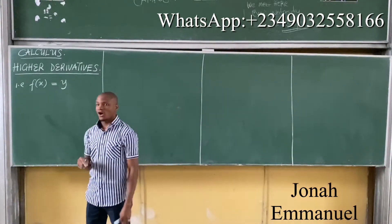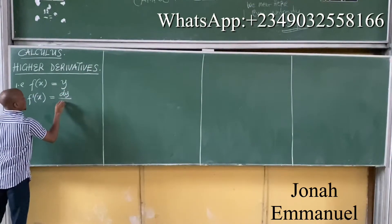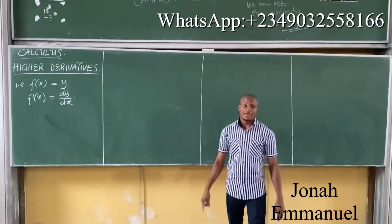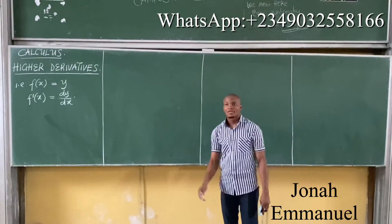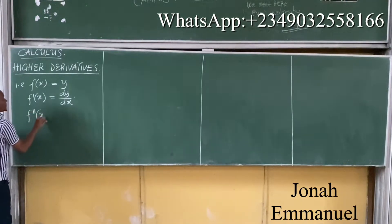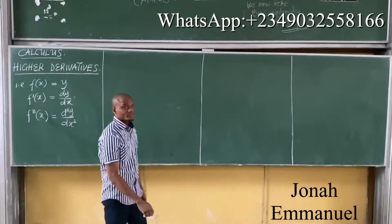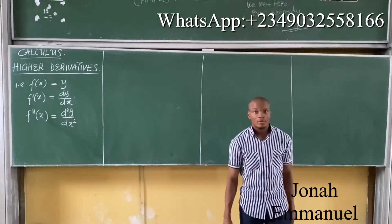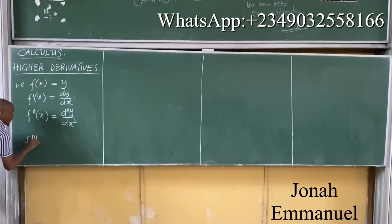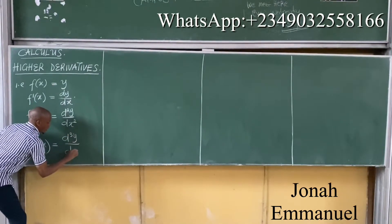The first derivative of the function is given by f prime of x, which is equal to dy over dx. The second derivative of the function is given by f prime prime of x, which is equal to d²y over dx². The third derivative of the function is given by f prime prime prime of x, which is equal to d³y over dx cubed.